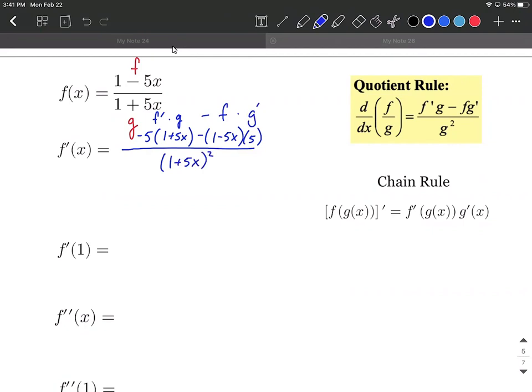Now we can clean up this numerator a little bit by doing a little bit of distributing and combining like terms. So let's go ahead and distribute that negative 5 to each one of those terms. So negative 5 times 1 is negative 5, negative 5 times 5x is going to be minus 25x. And then for this second part, I'm going to think of this 5 as being out in front, so it's going to be a negative 5 that's going to get distributed. So negative 5 times 1 is minus 5, and then negative 5 times negative 5x is going to be plus 25x as we distribute there, all over 1 plus 5x quantity squared.